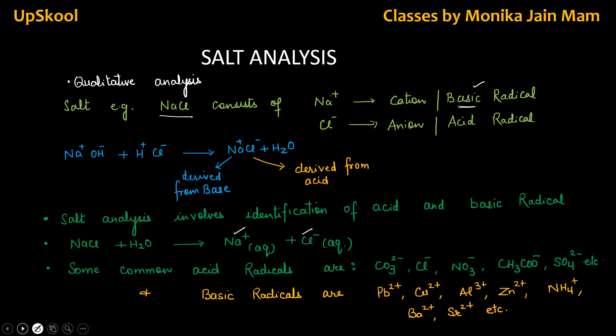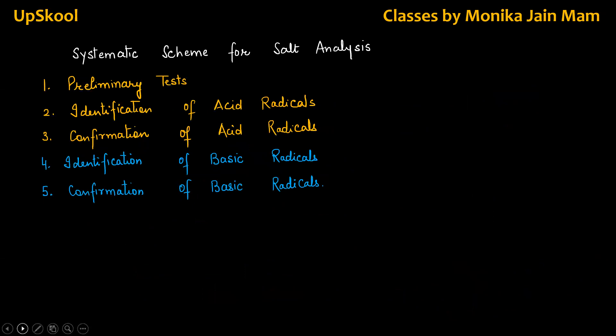After this, you can watch my videos which are related with salt analysis. How can we perform salt analysis in the lab? When we perform salt analysis, there is a systematic scheme, that is step-by-step scheme for salt analysis. First one, preliminary test and these are dry tests. We are not adding any solvent in dry tests. After that, we identify acid radical. Then we will confirm acid radical. Then, identification of basic radicals followed by confirmation of basic radicals. It is a five-step.